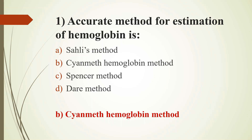Let's discuss the other options. Sahli's Method — hemoglobin is converted to acid hematin, then a color comparator is used for matching. Spencer Method uses oxyhemoglobin and is visual matching, which is less accurate. Dare Method uses a small glass chamber filled with whole blood by capillary action, and color of blood is matched visually. Spectrophotometer measurement makes cyanmethemoglobin method more accurate.